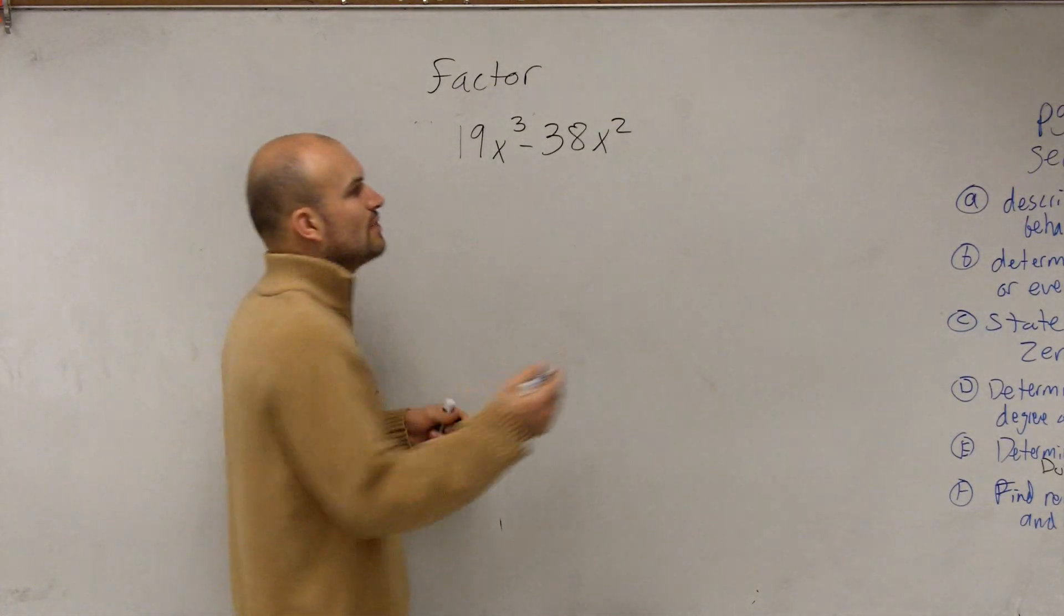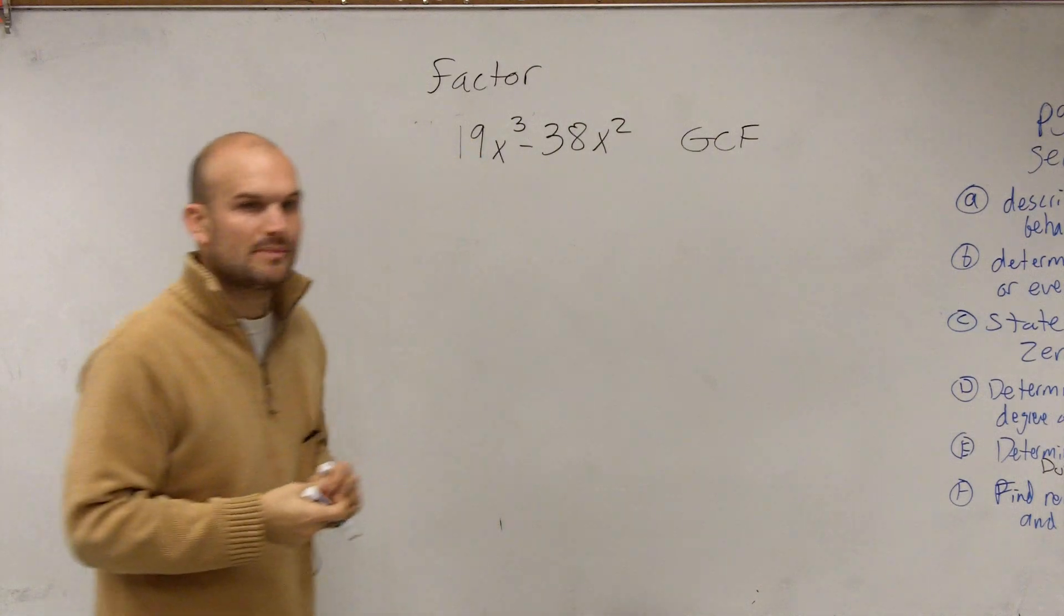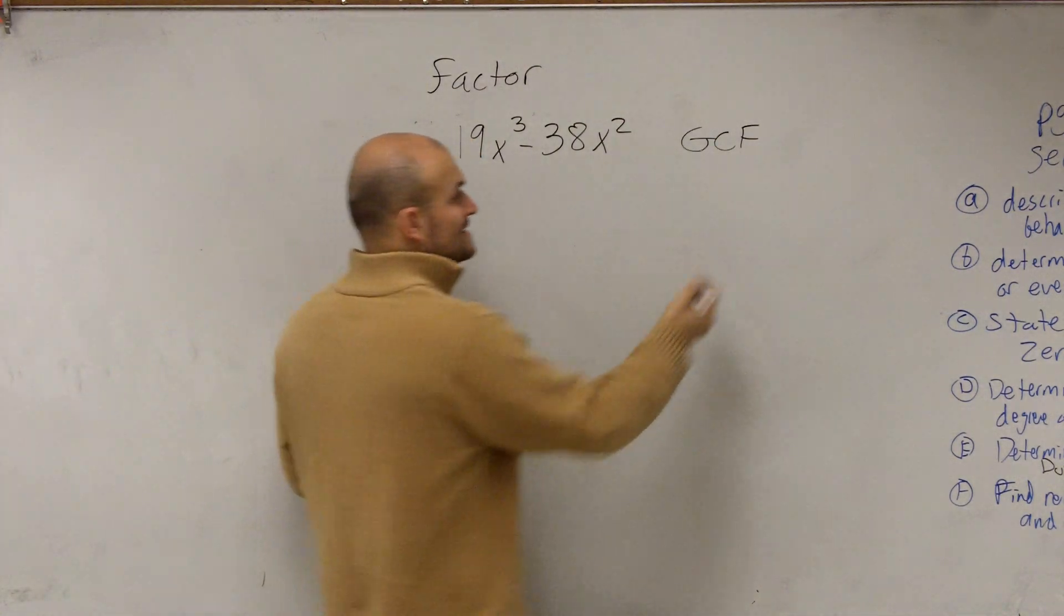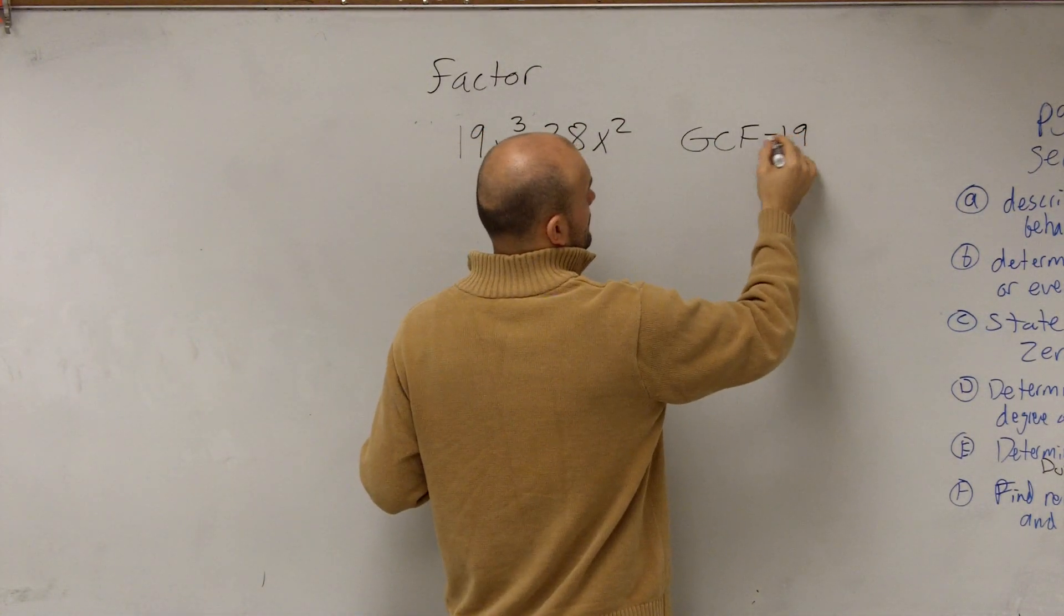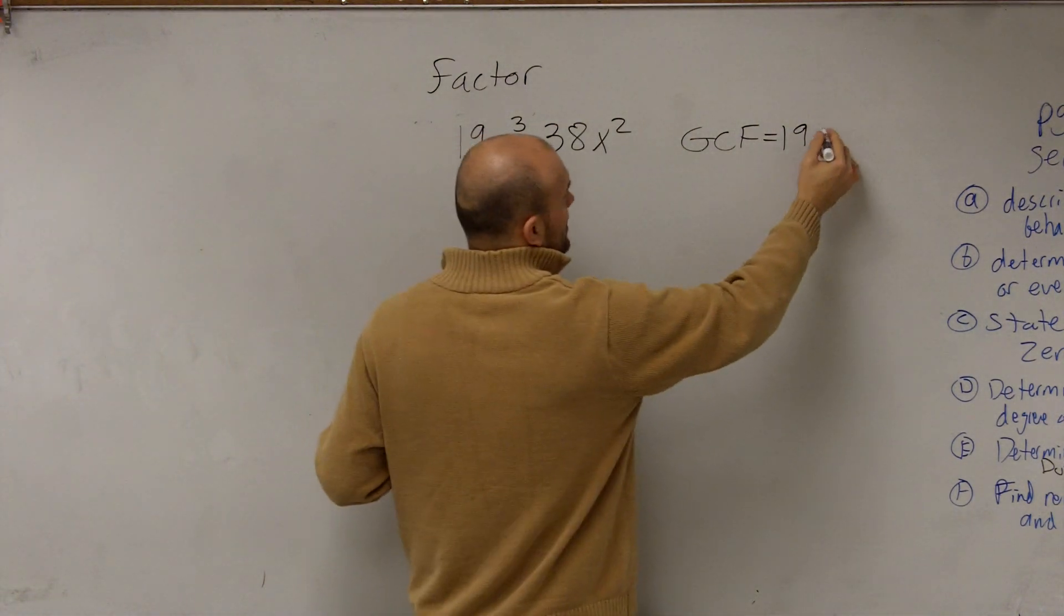So you look at these two terms, and you can write out, well, they have a GCF, which you can call a greatest common factor, which is 19 and then x to how many power? Squared, x to the second power.